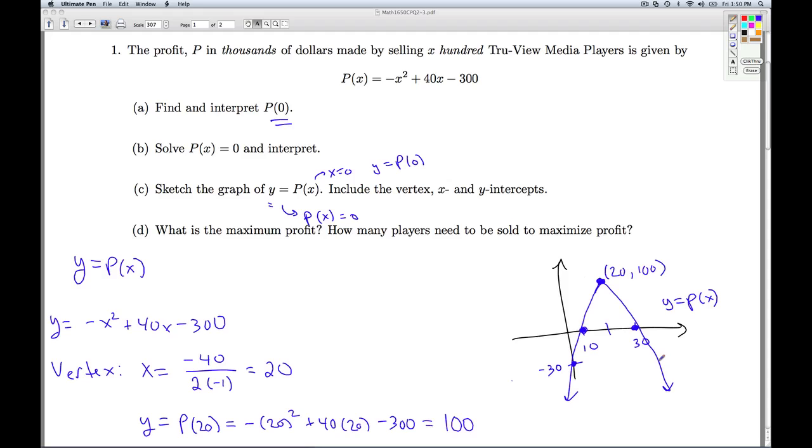And as we mentioned in class, the reason why this could happen is because in order to sell more and more players, you need to drop the price. Dropping the price decreases the revenue, and if the costs are still increasing, the cost overtakes the revenue and we get the negative profit again. Alright, so looking back at Part B, really these numbers, 10 and 30, this is the range of numbers, excuse me, this is the range of systems we want to sell in order to actually make a profit.